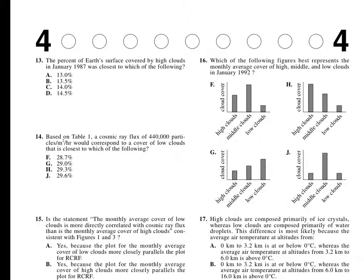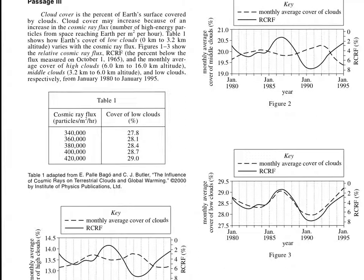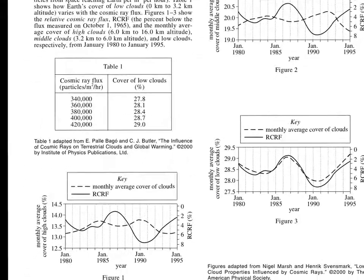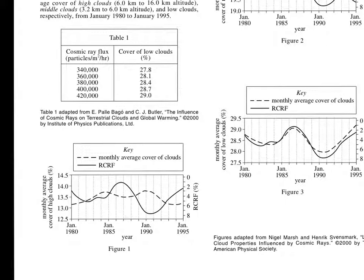Percent of the Earth's surface covered by high clouds in January 1987 was closest to which of the following? They have 13, 13.5, 14, and 14.5%. Let's go to the question. This chart right here is low clouds, this one is middle clouds, so I'm hoping the one at the bottom is high clouds. Let me go see. Yep, it is.